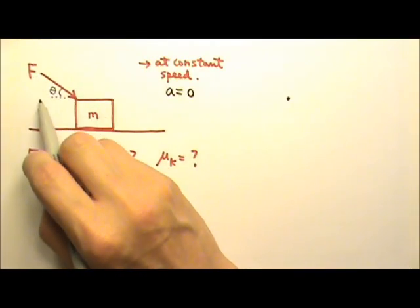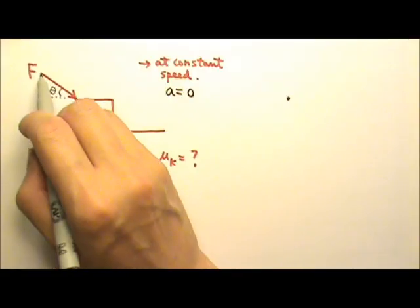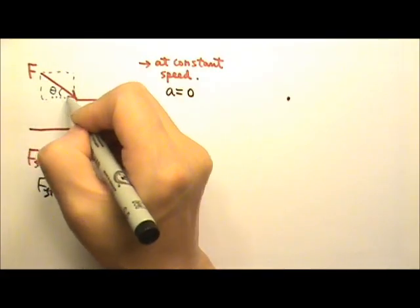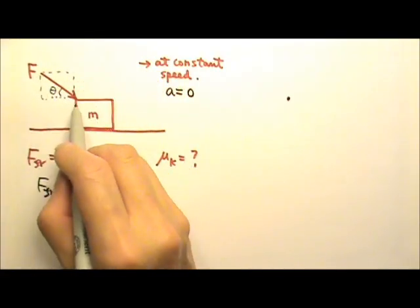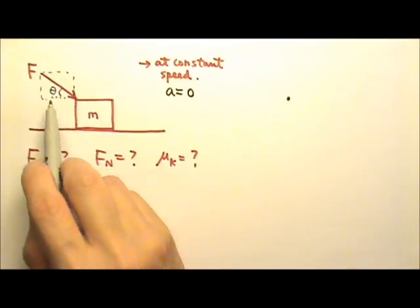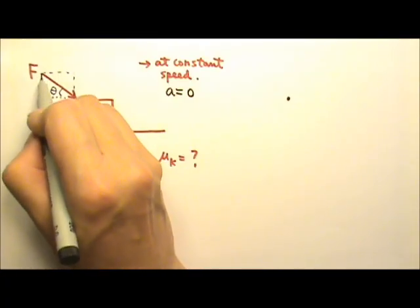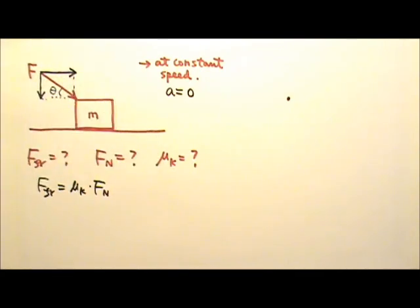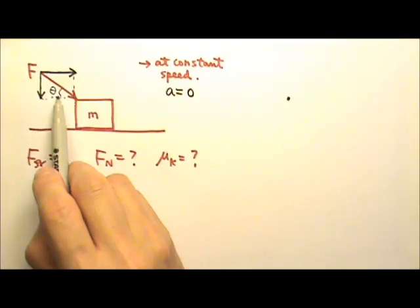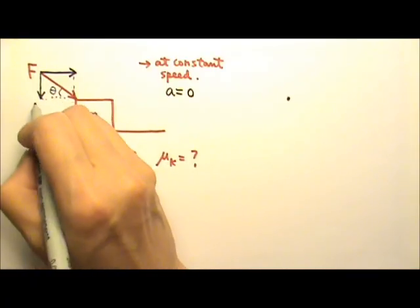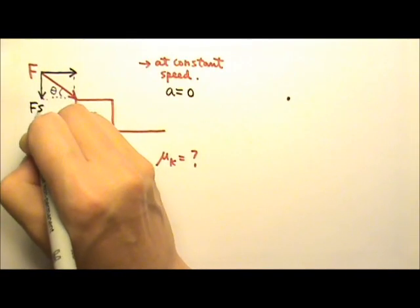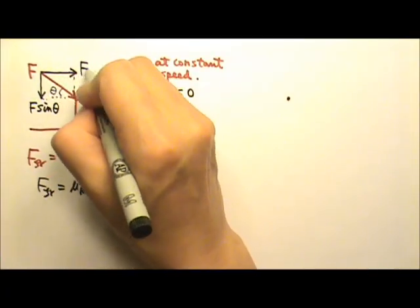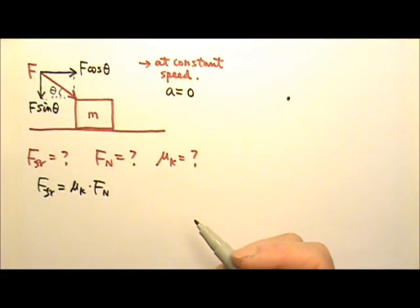So I'm going to find the components first. To find the components, we make a rectangle, and the force goes down and to the right, so the components will be down and to the right. The downward component is opposite to the angle, so this one is the sine component: F sine theta. That means the other one has to be the cosine: F cosine theta.